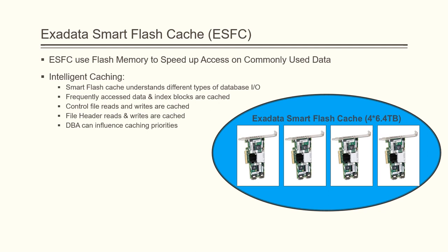DBAs can also influence what type of data is held in ESFC by using the parameter cell_flash_cache. There are three parameters that can be passed: first is 'keep', which makes it high priority to be kept in the Exadata Smart Flash Cache; second is 'default'; and when set to 'none', the data is never kept in the Exadata Smart Flash Cache.